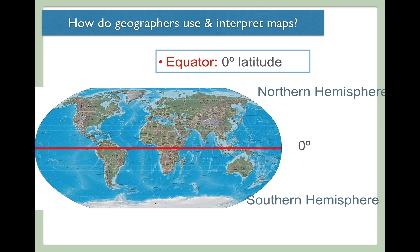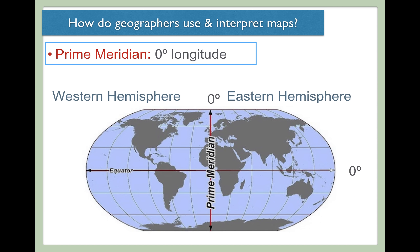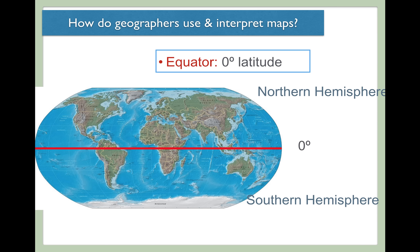Now let's talk about some specific and important lines. One you're all familiar with is the equator. The equator goes on the left-hand side of your notes — zero degrees latitude on the right. The equator divides the Earth into the northern hemisphere and southern hemisphere. The word 'hemisphere' in this context means half. Sometimes in a geography course we'll talk about patterns and differentiate between patterns of the northern hemisphere versus the southern hemisphere. So on your notes: equator on the left, zero degrees latitude on the right, and then note that it divides Earth into the northern and southern hemispheres.